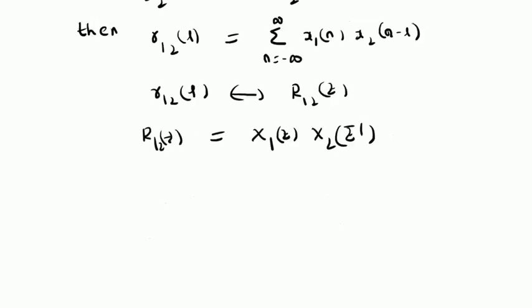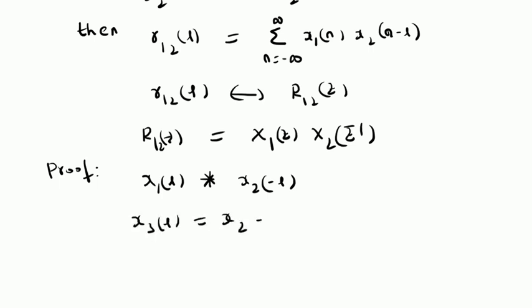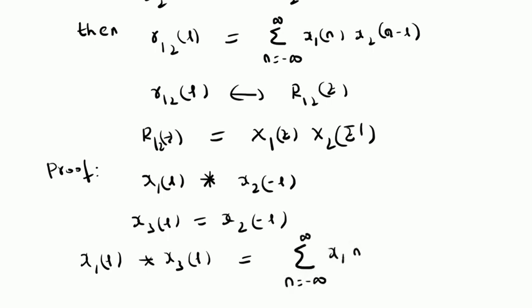Now let us look at the proof for this property. For this proof, we have to start with the convolution of these signals — that is, X1 of L convolved with X2 of minus L. We have to do convolution between X1 of L and X2 of minus L. Let us define a new signal X3 of L, which is equal to X2 of minus L. Then this convolution becomes the convolution of X1 of L with X3 of L, which by definition is the summation from n equals minus infinity to plus infinity of X1 of n multiplied by X3 of L minus n.